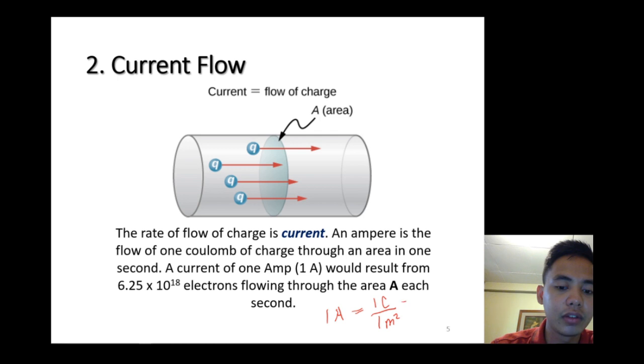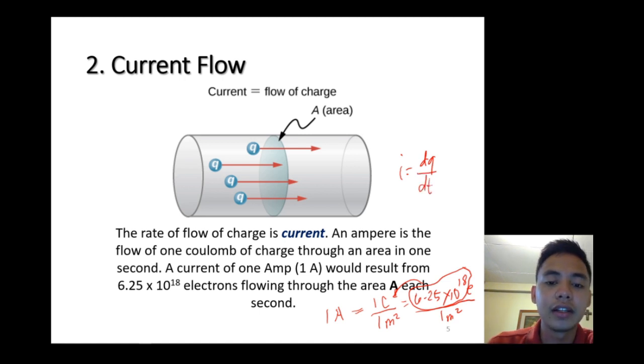One ampere equals one coulomb of charge over one meter squared. One coulomb is equivalent to 6.25 times 10 to the 18 electrons divided by one meter squared. Of course, we don't use this value in practical applications because it's too big. Instead, scientists make a convention of using one coulomb representing 6.25 times 10 to the 18 electrons. Later we will define it as dq over dt, so the current is the flow of the charge.